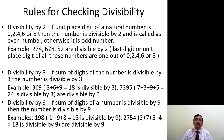The divisibility rule for 2: if the unit place digit of a natural number is 0, 2, 4, 6, or 8, then the number is divisible by 2 and is called an even number; otherwise it is odd. For example, 274, 678, and 52 are all divisible by 2 — look at the last digit of each, which is one of 0, 2, 4, 6, or 8.